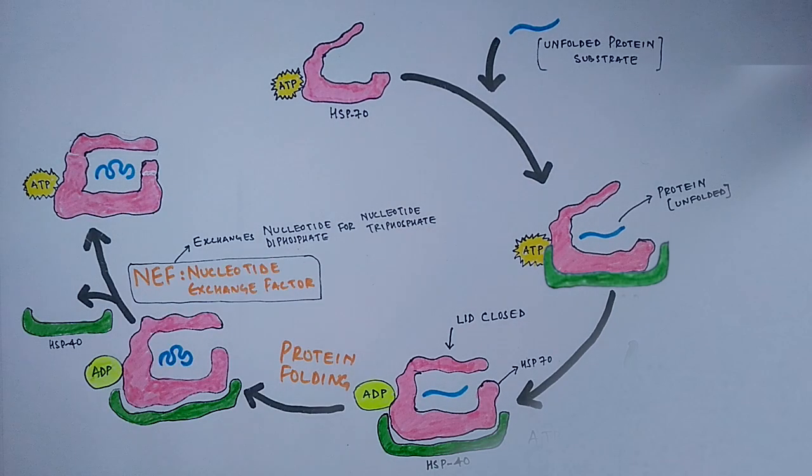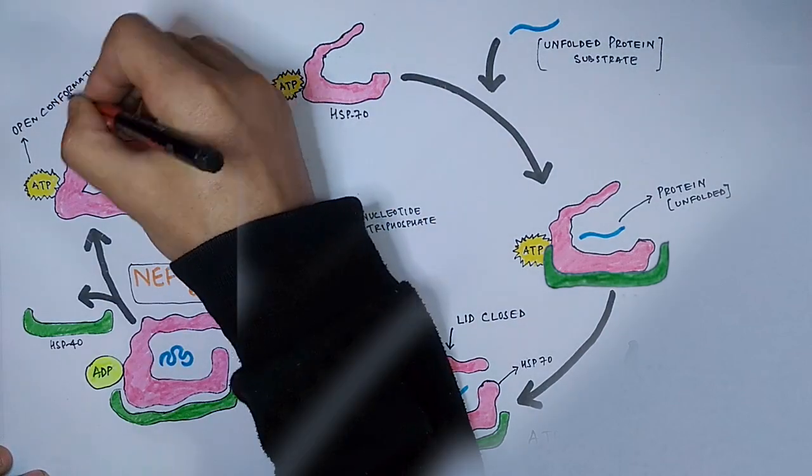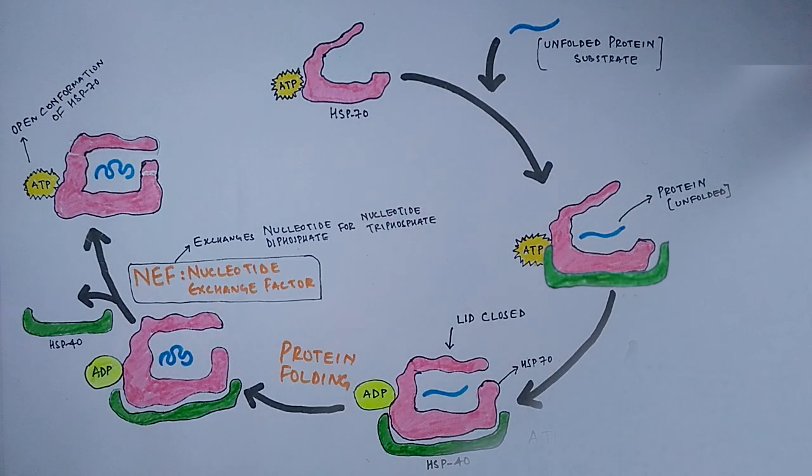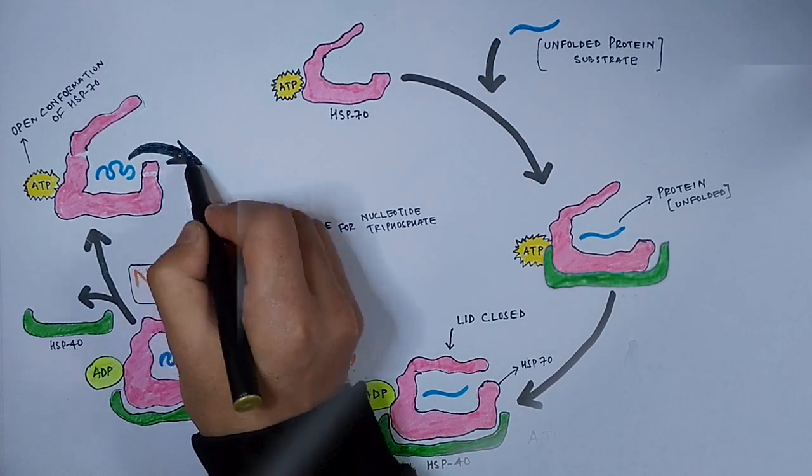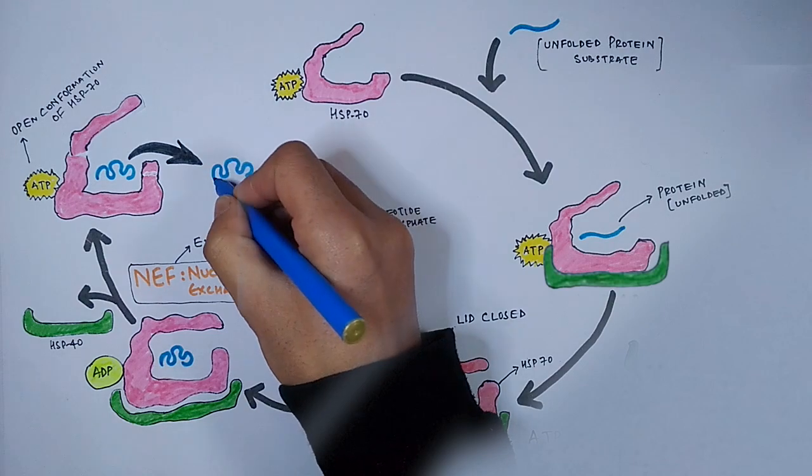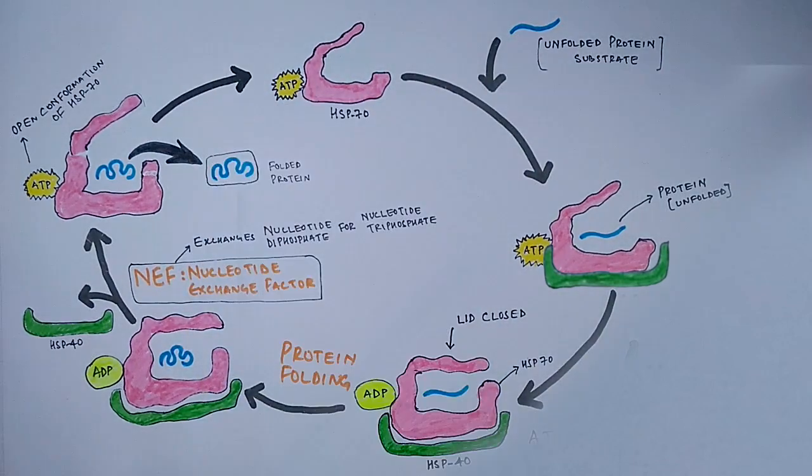We know HSP-70 bound to an ATP molecule is the open conformation of the HSP-70 molecule. So the lid gets opened slowly, and with this, the folded protein is released out and the HSP-70 chaperone system continues. So this concludes the HSP-70 chaperone system and its protein folding.